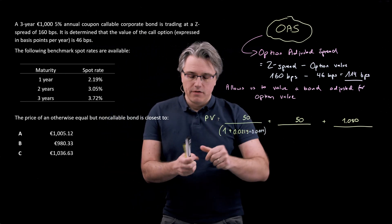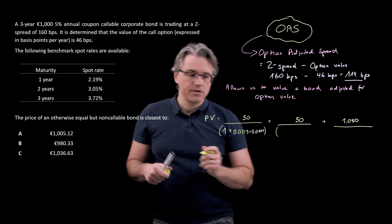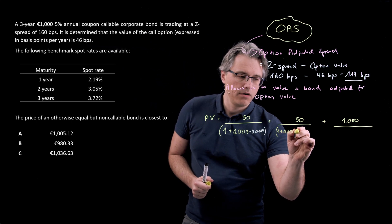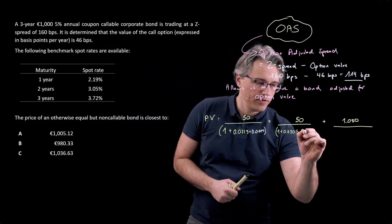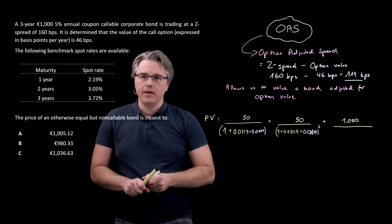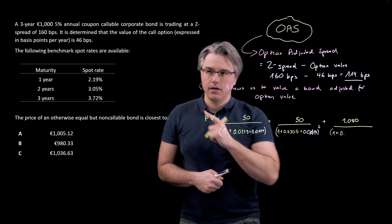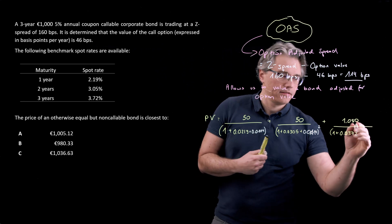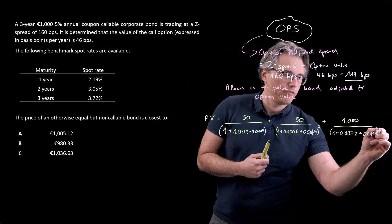We do the same thing over here, except instead of using the one-year spot rate, I'm going to utilize the two-year spot rate, 1 plus 0.0305 plus, obviously, that same 114 basis points. That's one zero too many, and this is going to be raised to the power of 2. For the third one, same procedure, 1 plus 0.0372, and add 0.0114 to it, raise this to the power of 3.